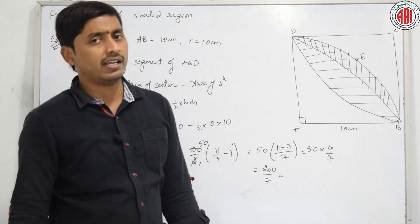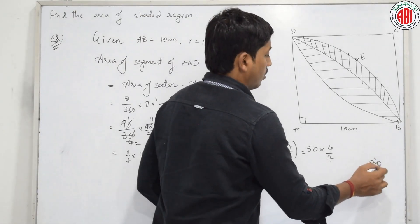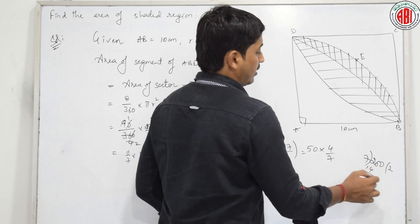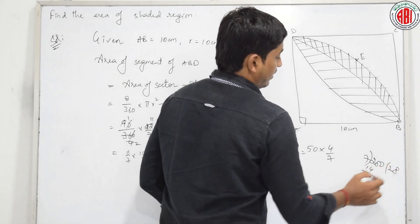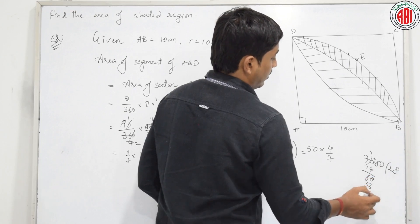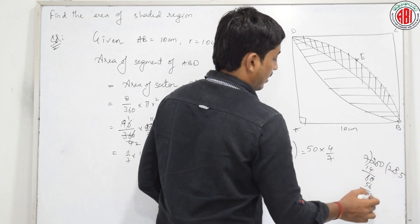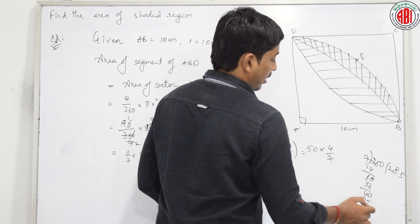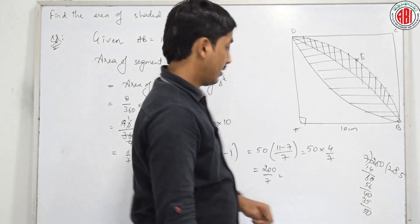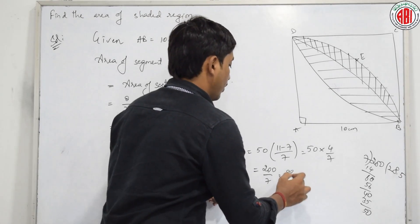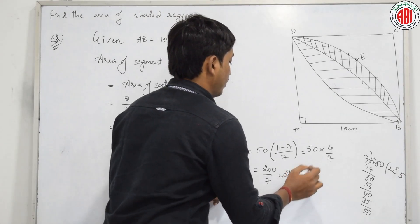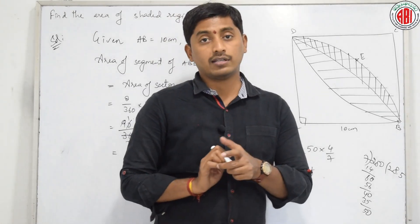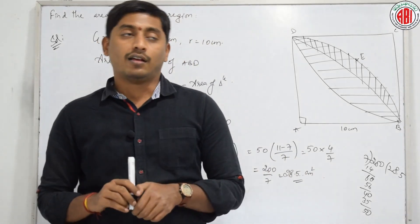200 divided by 7 is approximately 28.5 centimetre square. By this problem we have ended the chapter on tangents and secants to a circle.